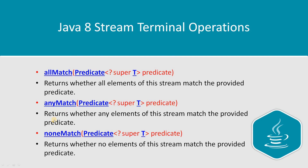anyMatch returns whether any element of the stream matches the provided predicate. For example, given a stream of 1 to 10, if you check whether any element is greater than 5 — since elements 6 through 10 satisfy this, you get true. noneMatch returns true if none of the elements in your input stream satisfy the given condition.